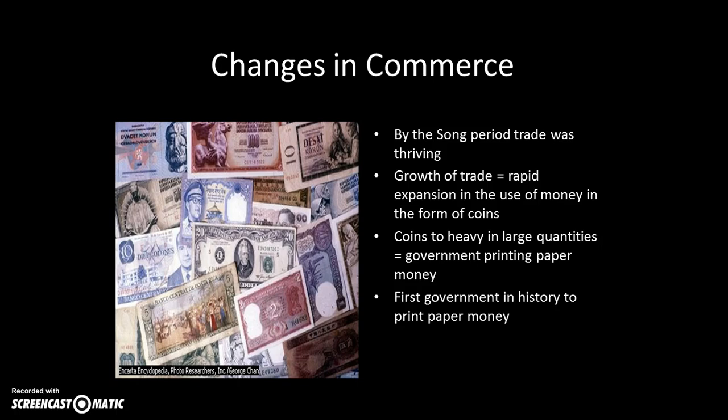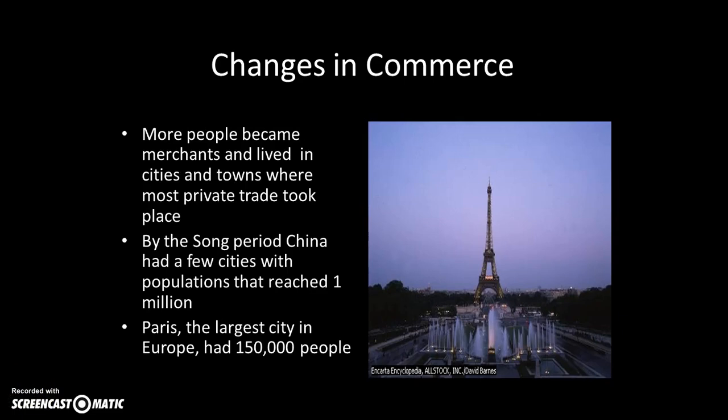With more trade came more use of coins, but coins can get very heavy when you have large amounts of them. The solution was to print paper money — promissory notes or banknotes. Song China was the first government to create paper money; some banks had issued banknotes before, but Song China was the first to issue them from the government. These pieces of paper held value just like a coin, but were obviously much easier to carry and conduct business with.